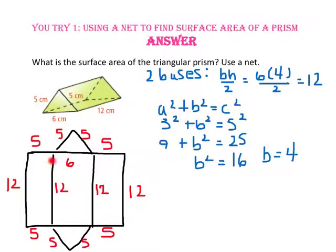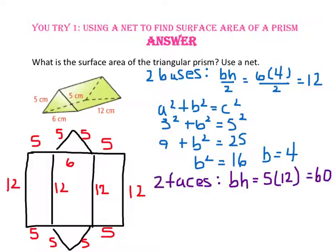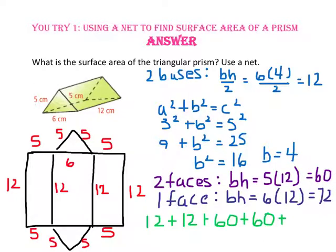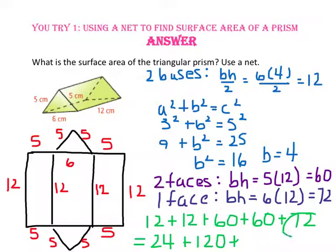Now we have two rectangular lateral faces with base length five and height 12, and one rectangular lateral face with base length six and height 12. Adding our two triangles at 12 centimeters squared each, our two rectangles at 60 centimeters squared each, and our rectangle at 72 centimeters squared: 12 plus 12 is 24, 60 plus 60 is 120, and 120 plus 72 gives us 216 centimeters squared.